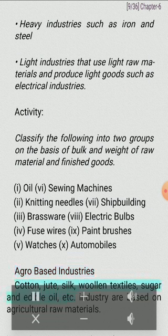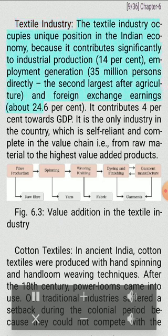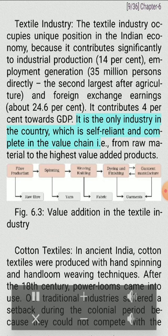Agro-based industries — cotton, jute, silk, woolen textiles, sugar and edible oil etc. — are based on agricultural raw materials. The textile industry occupies a unique position in the Indian economy because it contributes significantly to industrial production (14%), employment generation (35 million persons directly, the second largest after agriculture), and foreign exchange earnings (about 24%). It contributes 4% towards GDP. It is the only industry in the country which is self-reliant and complete in the value chain, i.e. from raw material to the highest value-added products.